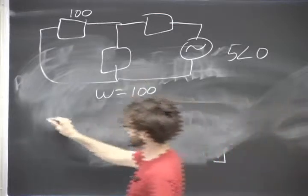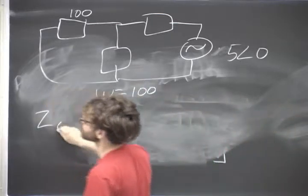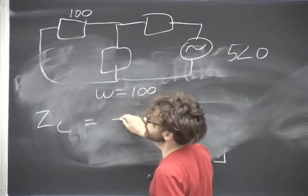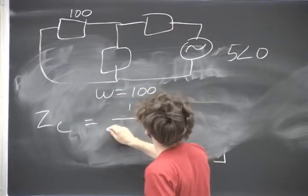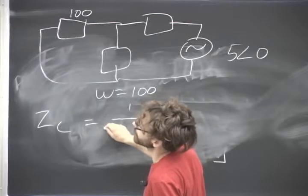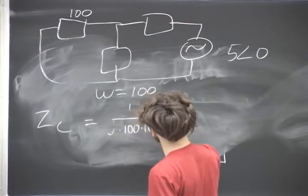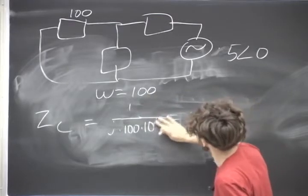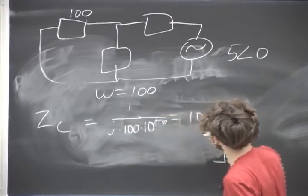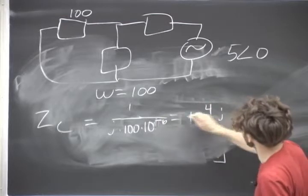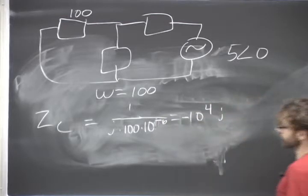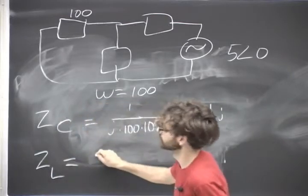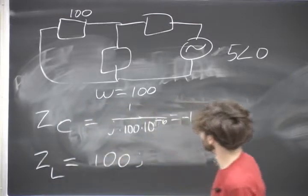So what's zc going to be? Let's see. In this case, it's negative 1 over, yeah, 1 over j 100, 10 to the 6th, 10 to the minus, oh sorry, minus 6. It's 10 to the 4th j minus. Okay. That's c. And then l is just what? 100 j. 100 j. Okay. That's c. All right.